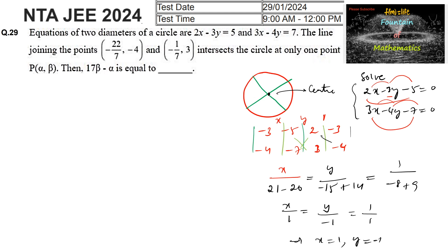Therefore x equals 1 and y equals minus 1. The center of the circle is (1, minus 1). It is also given that the line joining two points intersects the circle at one and only one point, which means it is a tangent. Let us find the equation of that tangent line.